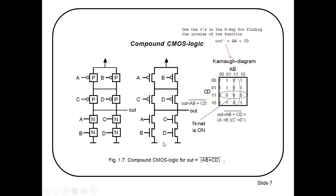In the pull-up network, since A and B were in series in the pull-down network, they come in parallel — here you can see A and B in parallel using PMOS transistors. Similarly, C and D were in series in the pull-down network so they come in parallel in the pull-up network. This whole AB and CD combination is now in series in the pull-up network. Connect VDD at the top and ground at the bottom, and you get the output. This is the standard procedure for implementing any complex combinational circuit.